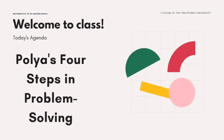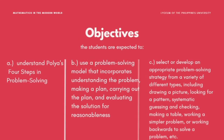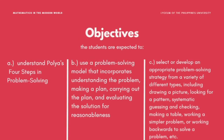Before we go through the topic, I have here the list of objectives. The students are expected to: A. Understand Polya's four steps in problem solving. B. Use a problem solving model that incorporates understanding the problem, making a plan, carrying out the plan, and evaluating the solution for reasonableness.